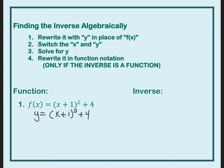An inverse means that we're going to flip the x and y — they're going to switch places. So this x and y that you see here, we just flip places, and we say that x equals 2 times the quantity y plus 1 squared plus 4. Now our job is to solve for y, so first we're going to subtract 4 from both sides. We have x minus 4 equals y plus 1 squared.